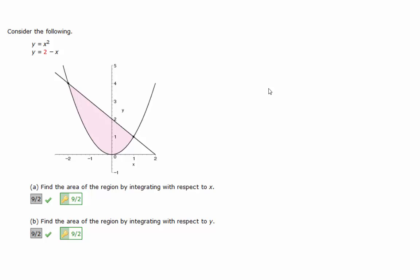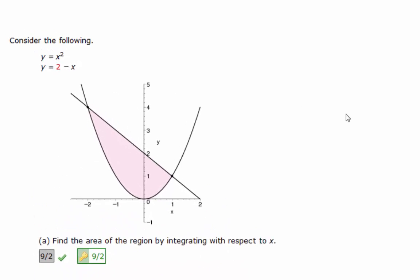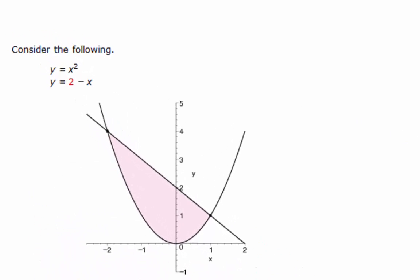Hi, I'm Ms. Hearn. Let's get started. We have y equals x squared and y equals 2 minus x, and we're looking for the area of the region that's shaded in pink there. You're supposed to work it two ways: one by integrating with respect to x and one by integrating with respect to y.